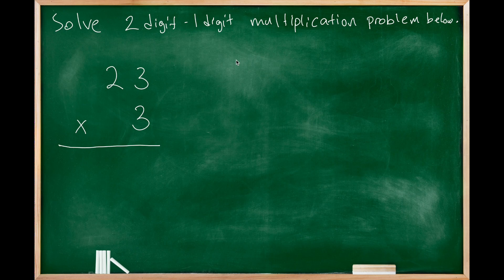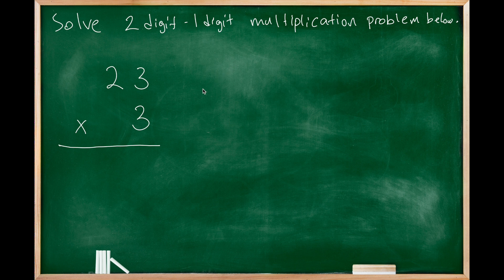Hey there, in this video we will solve a 2-digit by 1-digit multiplication problem. So we have 23 times 3. Let's get back to the idea of multiplication.